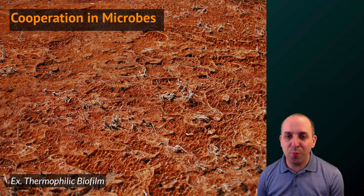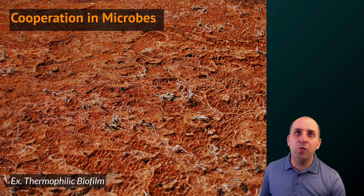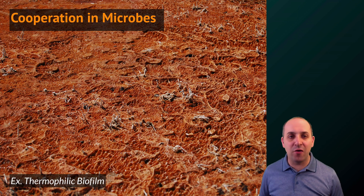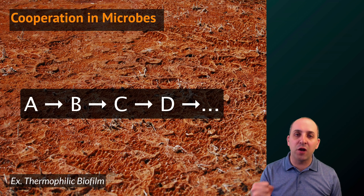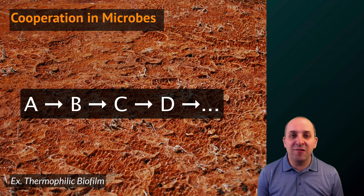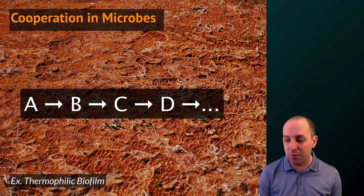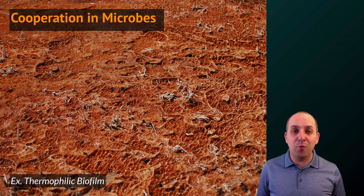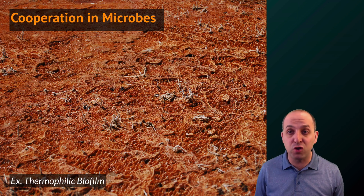We see cooperation in microbes pretty much anywhere we look. One of the cooler examples are what are known as biofilms — diverse groups of microbes that live together and chain their metabolisms such that the end products of one organism's metabolism are the starting point for the next, and so on. By existing in these diverse communities, these microbes can exploit environments where they would not be able to live separately. This is another great example of how cooperation not only increases metabolic efficiency, but also expands the available habitats and niches that organisms can exploit through that cooperation.